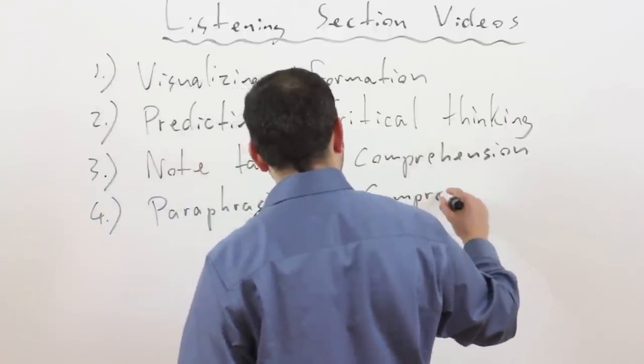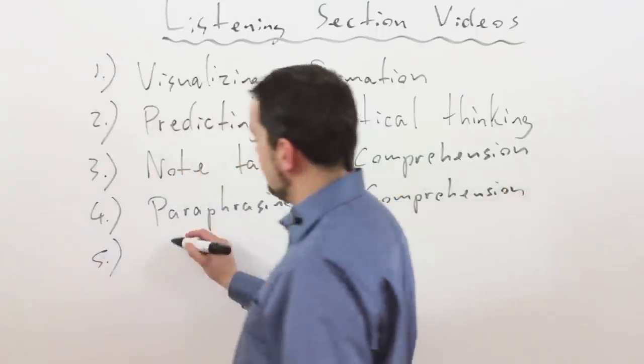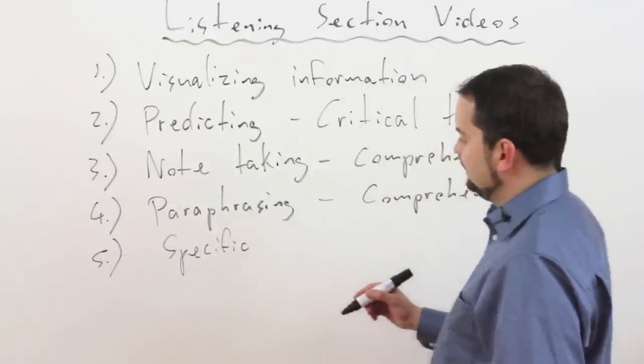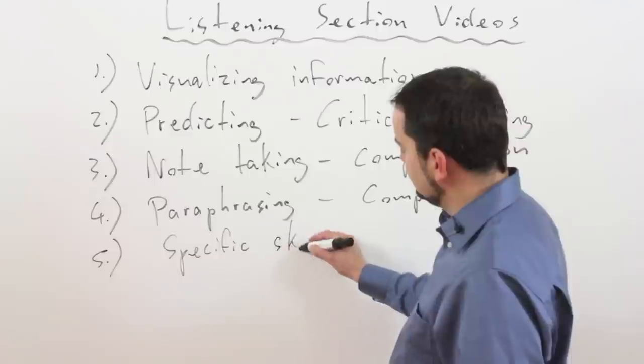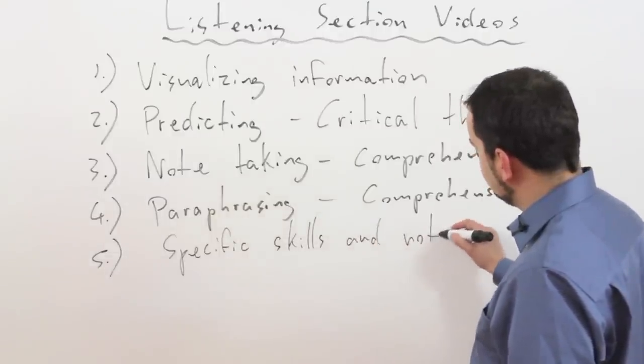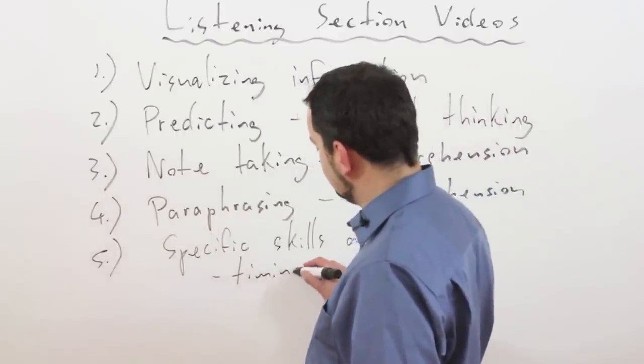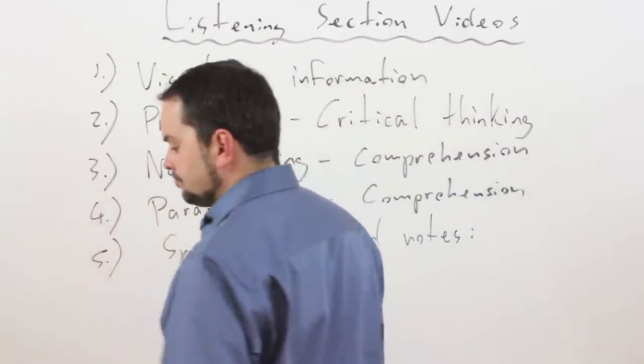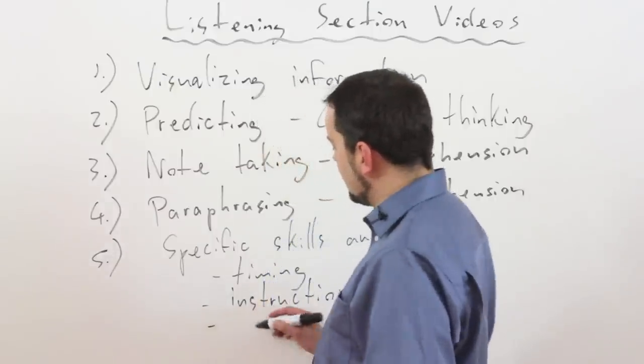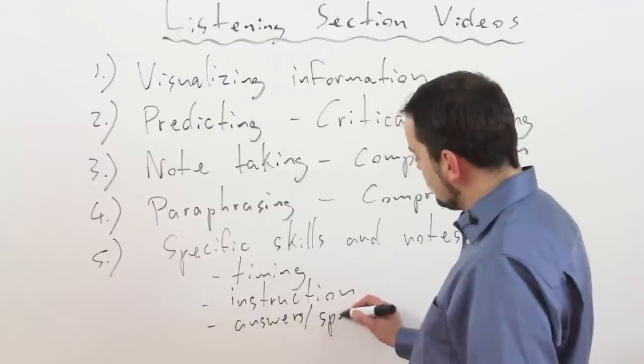The third part is note-taking for comprehension. The fourth thing is paraphrasing, again for comprehension. And then we're going to look fifth at some specific skills and notes, such as timing, instructions, and answers, which includes spelling.